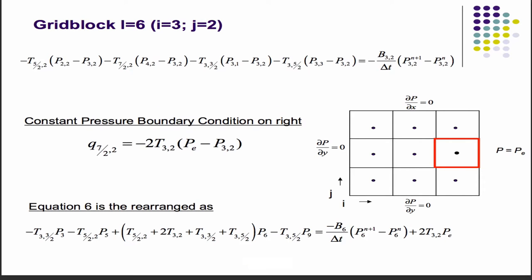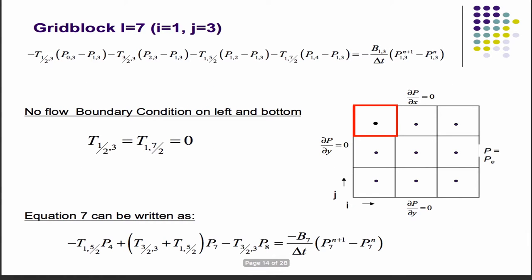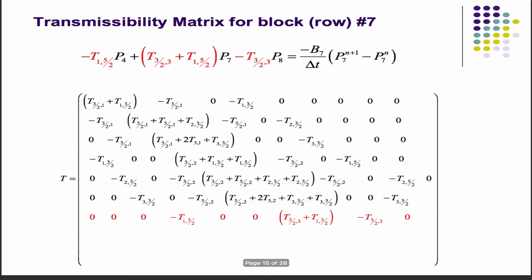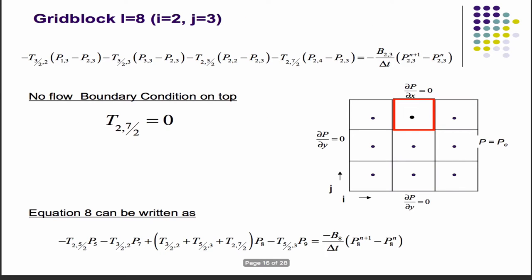This one's more of the same, constant pressure boundary condition on that guy. This is very similar to what we've already seen, two constant, two no flow boundary conditions.